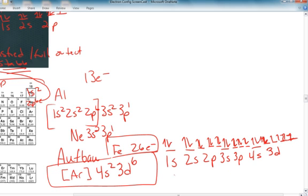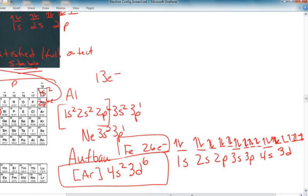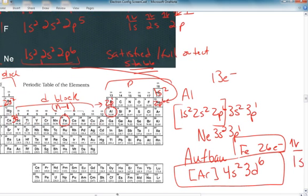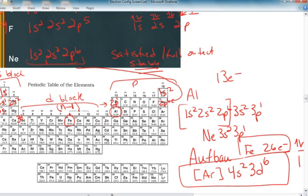That's the longhand notation for electron configuration for iron. So we can use the periodic table as a tool to determine the electron configuration. You don't have to memorize the order because the periodic table tells us what it is.